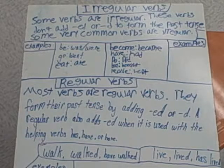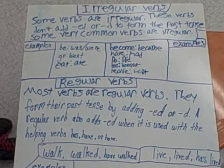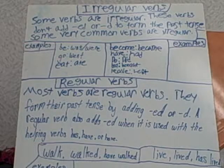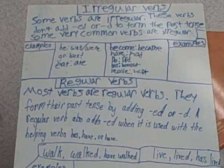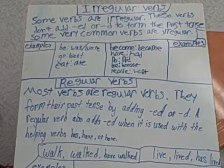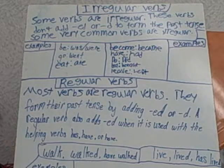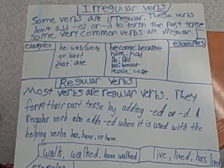Examples of irregular verbs: be → was/were, go → went, eat → ate, become → became, have → had, do → did, buy → bought, lead → led, leave → left.